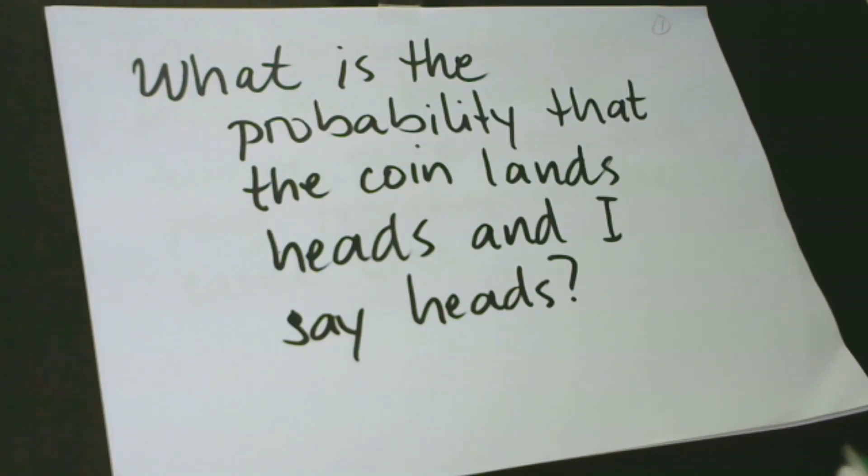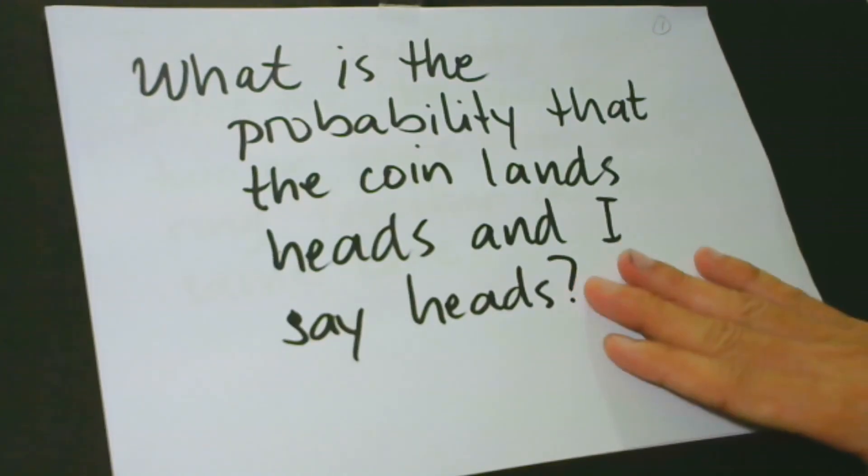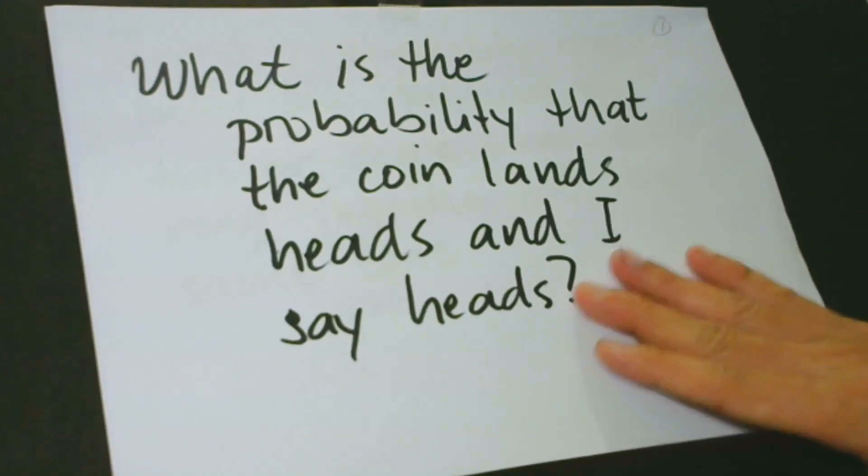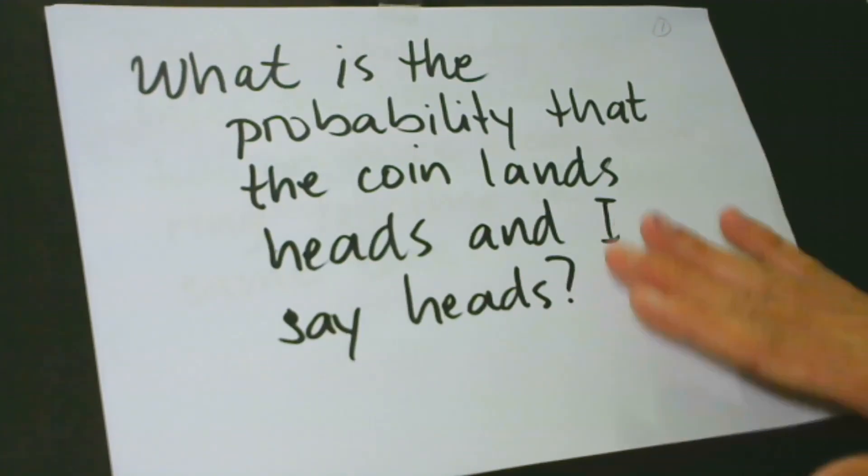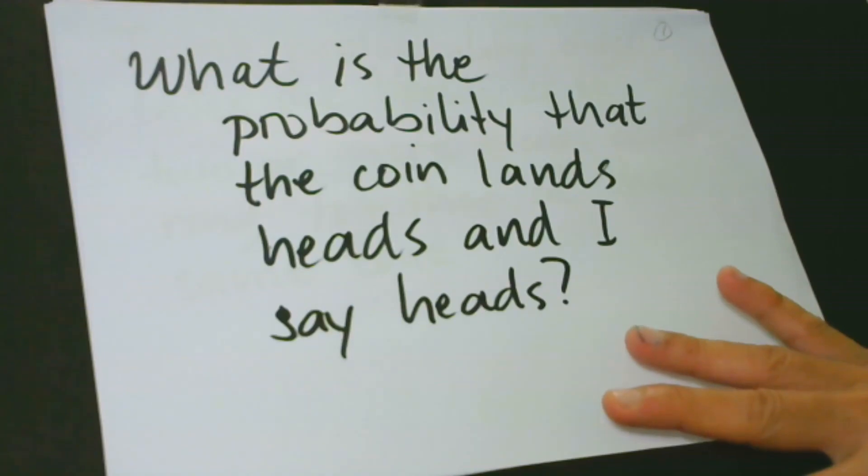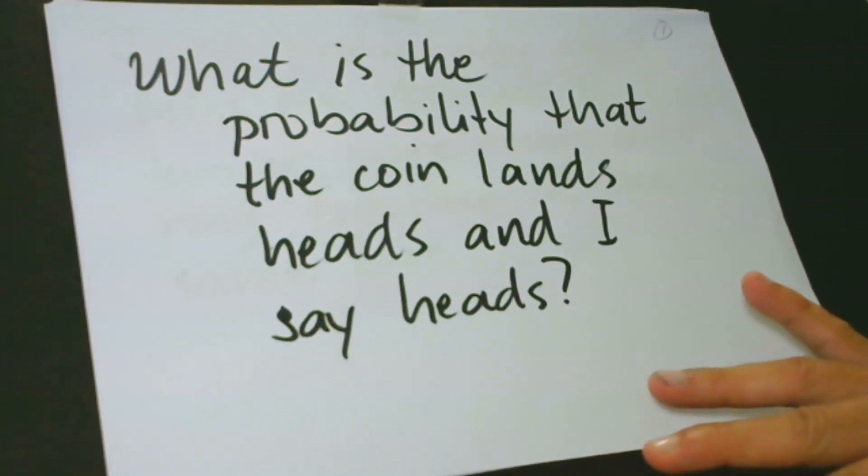Sometimes there are two or more variables. Then, we would like to know the probability that they each take a particular value. Taking our example in lesson number 4, we would like to ask ourselves, what is the probability that the coin lands heads, and I say heads? This kind of question is different from P, the probability of Y is 1, given that X is 1.